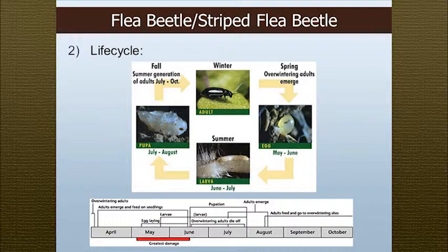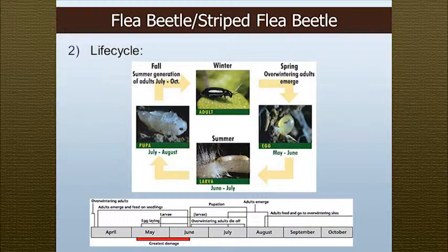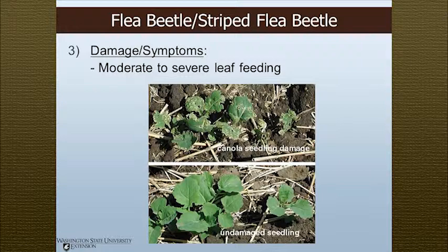Flea beetles, also known as striped flea beetles. These guys are shiny and small — two to three millimeters — and have enlarged hind legs. They're called flea beetles because once disturbed they will spring and jump like a flea. Life cycle: adults overwinter and emerge between May and June, start laying eggs and feed through the summer; eggs hatch into larvae which pupate and develop in the soil. Here we can see moderate to severe leaf feeding damage — the canola seedlings look like they've been shot with a shotgun, with tiny little holes everywhere, compared to non-damaged canola.